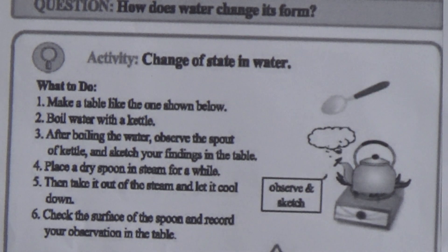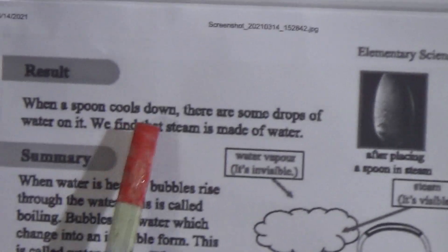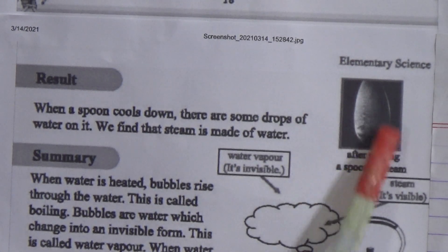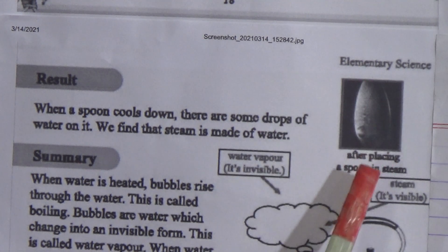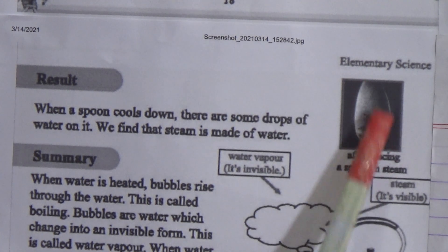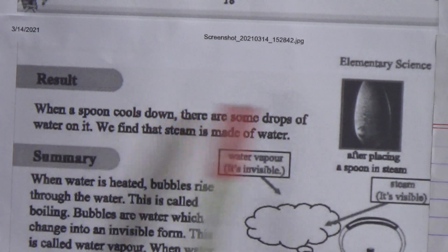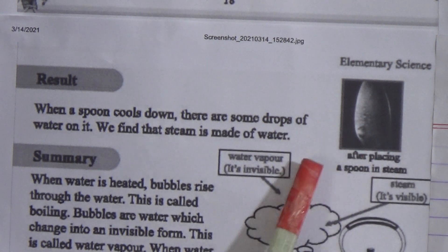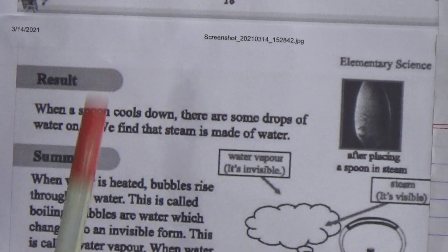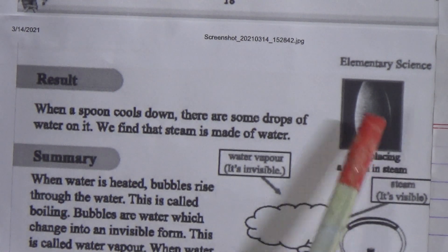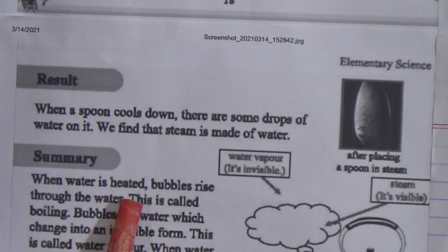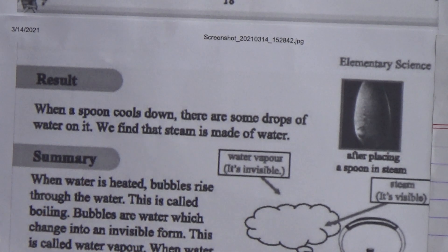When a spoon is placed in steam and pulled down, there are some drops of water on it. This figure shows the spoon after placing it in steam — we find that steam is made of water. When water is heated, bubbles rise through the water, and this is called boiling. Underline this line: when water is heated, bubbles rise through the water — this is called boiling.